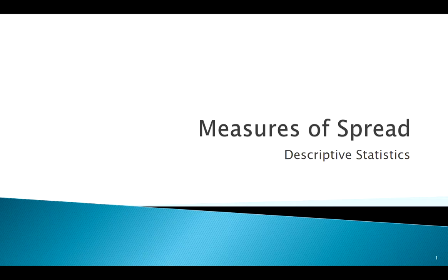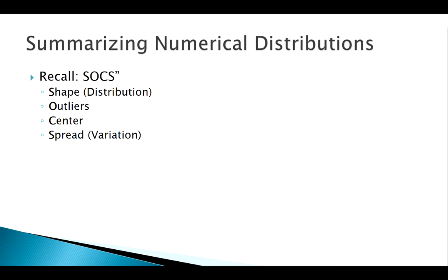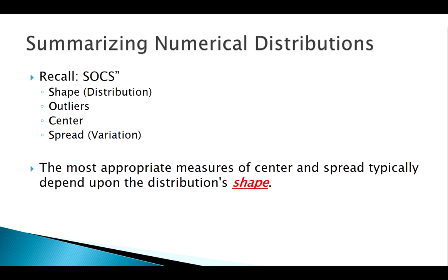Okay, welcome back. Today we're going to finish up our talk about descriptive statistics, looking at some measures of spread. Remember where we're at: we're thinking about summarizing quantitative or numerical distributions, and we're working through the acronym SOCS - shape, outliers, center, and now spread. The most appropriate measures of center and spread that we choose depend on the shape of the distribution and whether we have outliers or not.